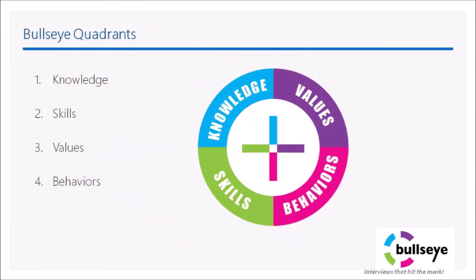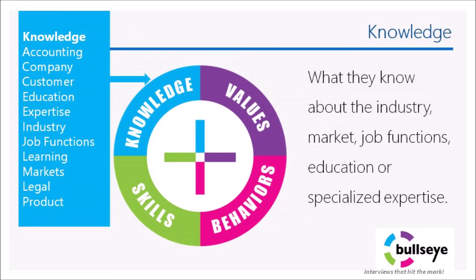The Bullseye model takes all of these different theories and puts them into one simple model with four quadrants: knowledge, skills, values, and behaviors. The first quadrant is knowledge — what they know about the industry, the market, the job functions, their education, or any specialized expertise they have. Topics include accounting, the company, customer, education, expertise, industry, job functions, learning, and products. This is basically information they know or have obtained through education or experience. A good way to assess their knowledge level is to give them a simple test prior to or after the interview.